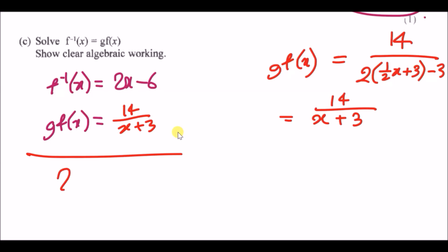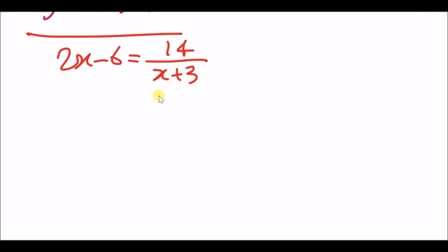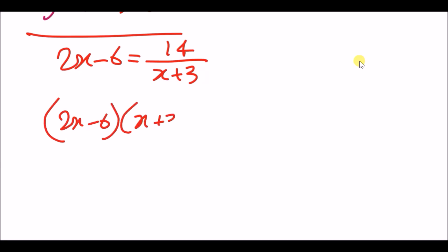So we have 2x − 6 = 14 over (x + 3). The first rule is always clear the fraction — multiply (x + 3) across, giving (2x − 6)(x + 3) = 14.